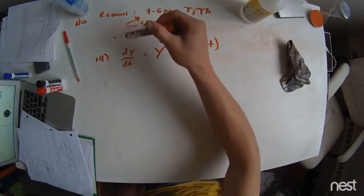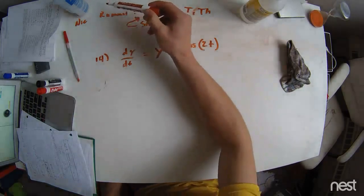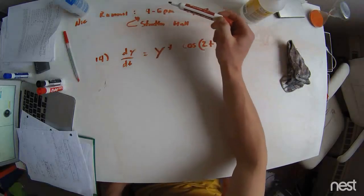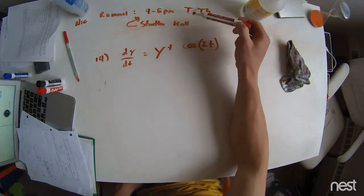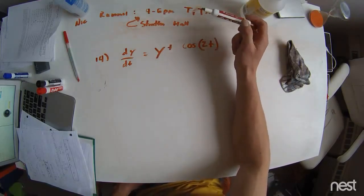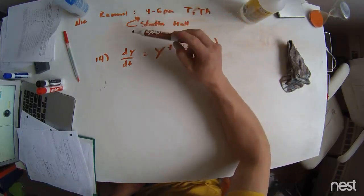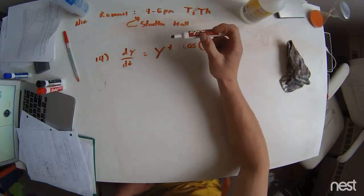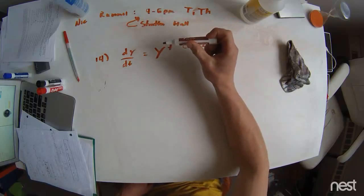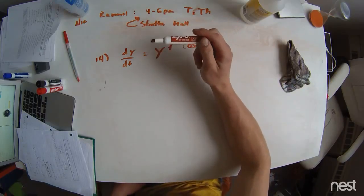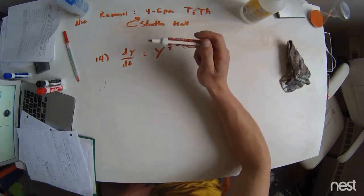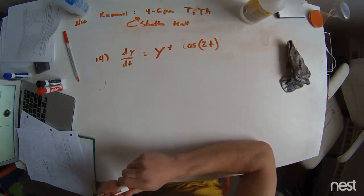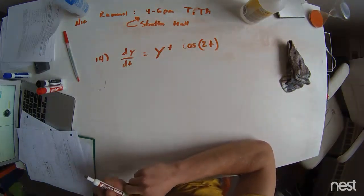Hey everybody, my name is Nick Rommel. I'm a TA for Scott. I have office hours from 4 to 6 in Stratton Hall on Tuesdays and Thursdays. I'm there with John Helland, he's another one of your TAs. You can find our office hours on the calendar, as well as other places on the website.